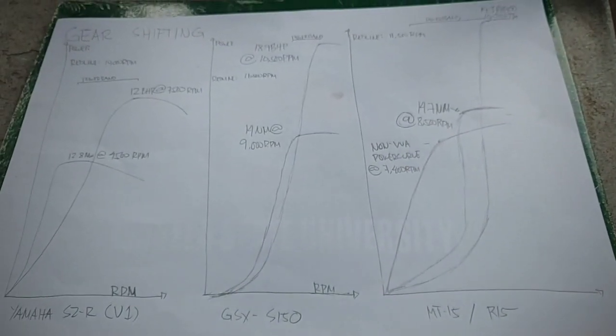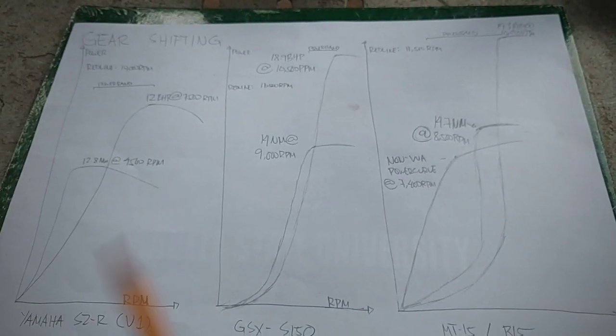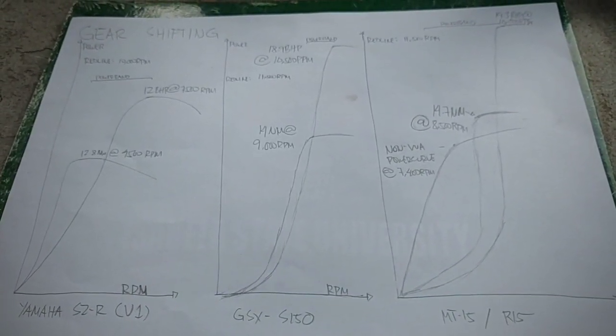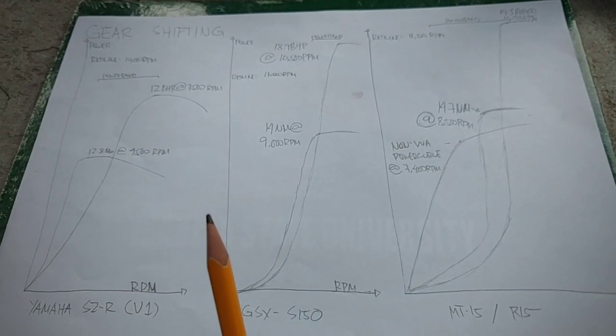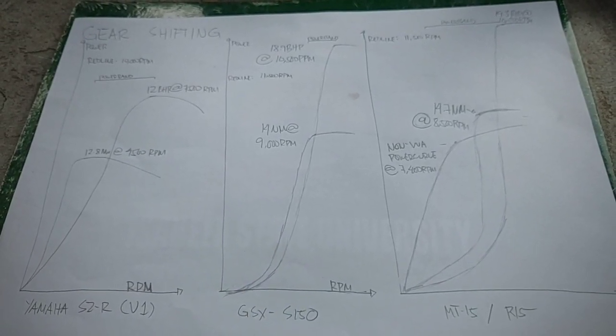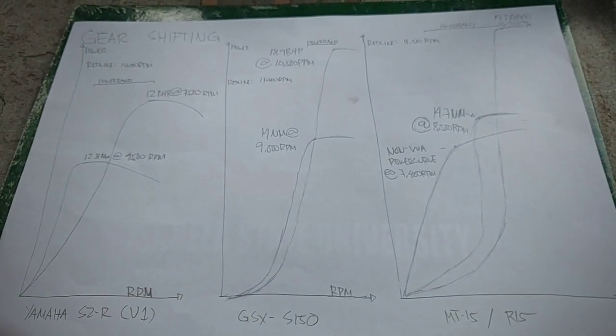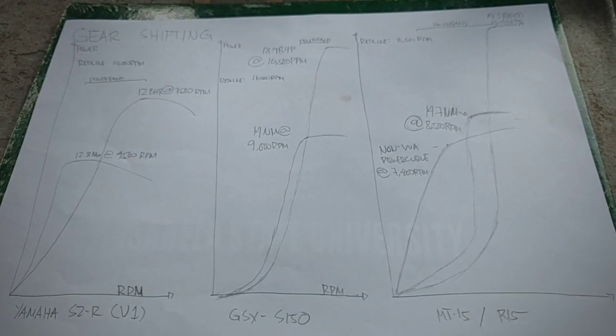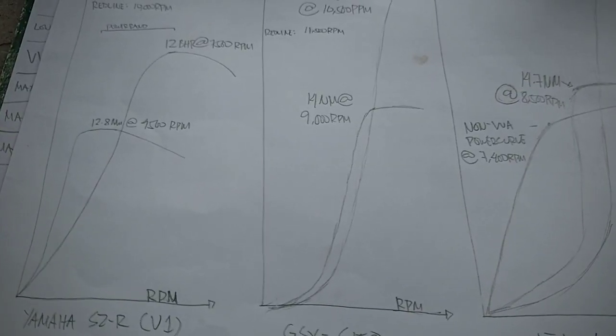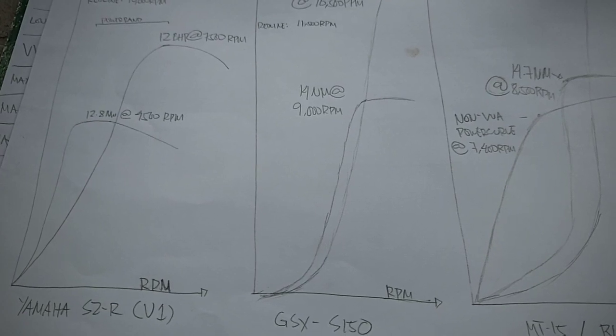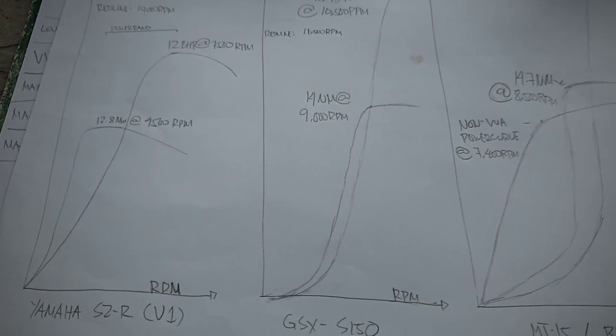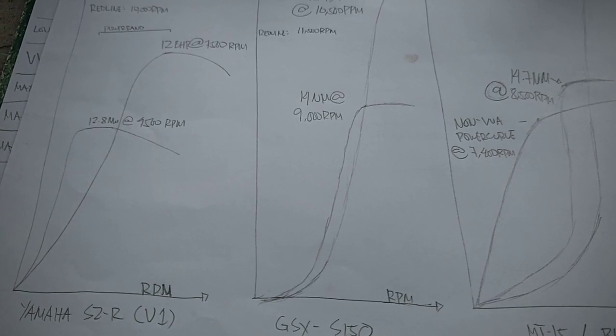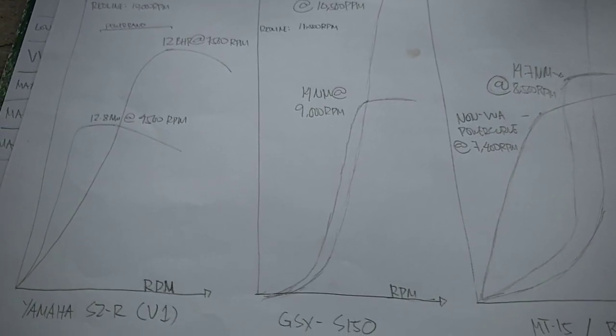So ngayon, alam na natin yung iba't ibang klase ng behavior ng motor. So kailan tayo makakapag-shift para sa optimum power output ng motor natin base sa RPM? So first of all, kailangan hanapin muna natin kung nasan yung power band ng motor para alam natin kung aling RPM yung magagamit natin dun sa buong tachometer.